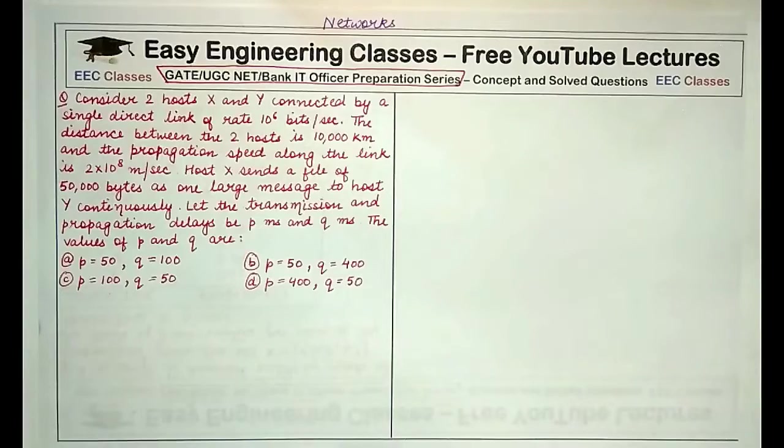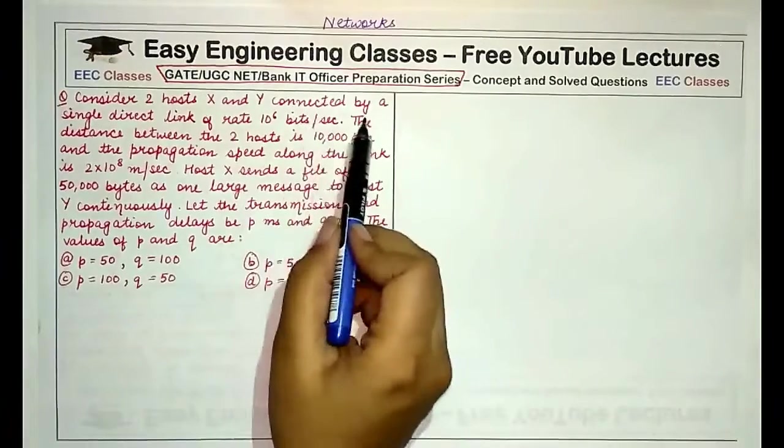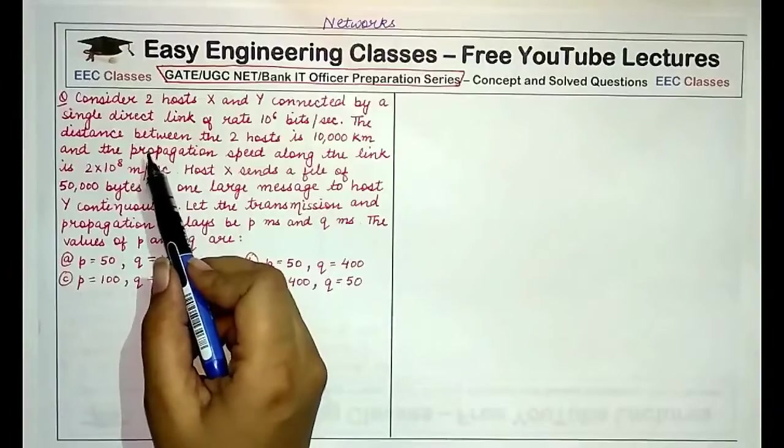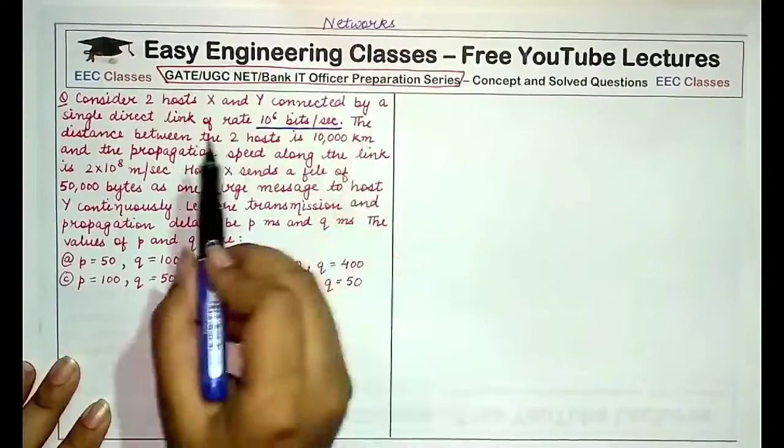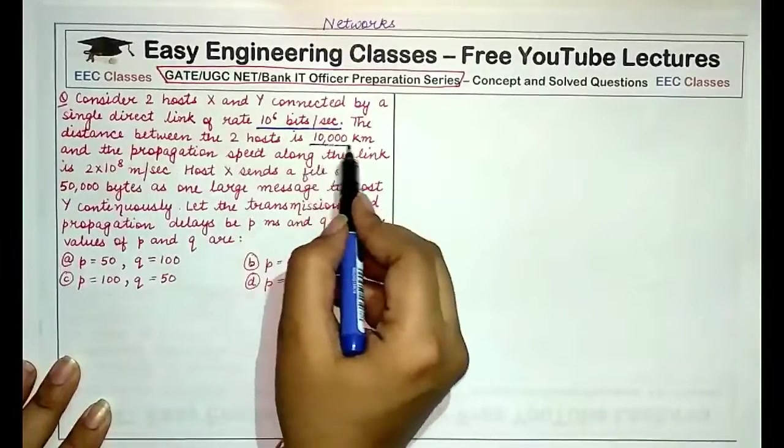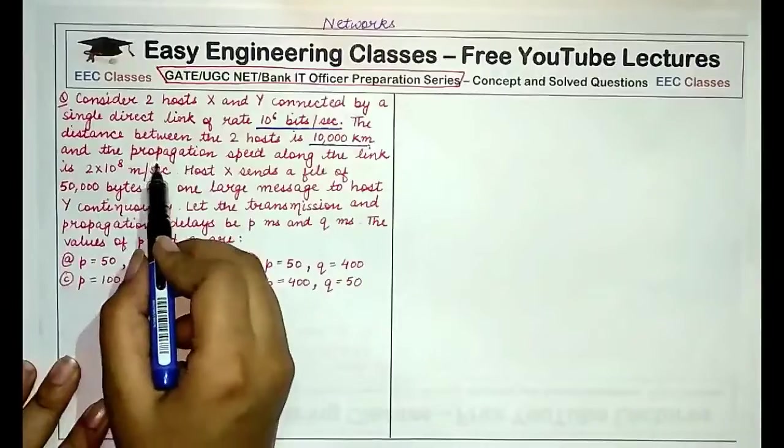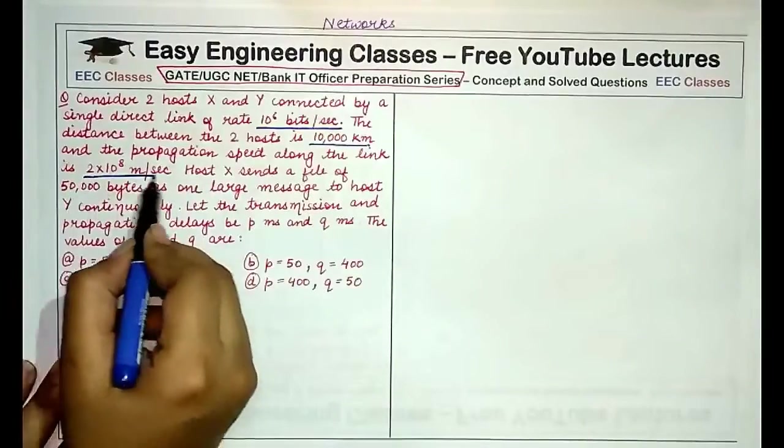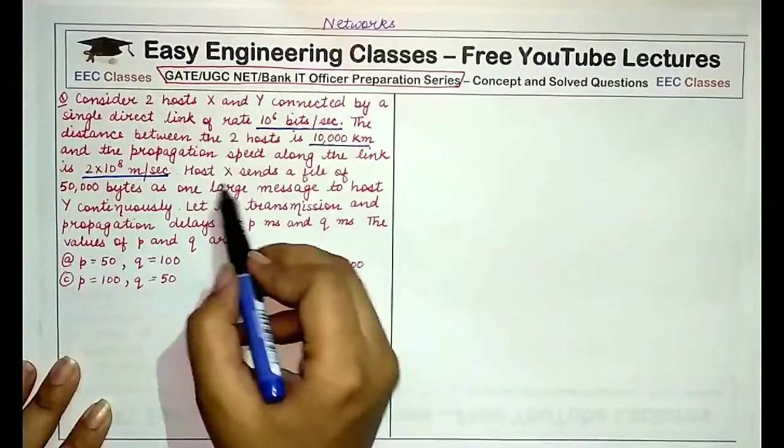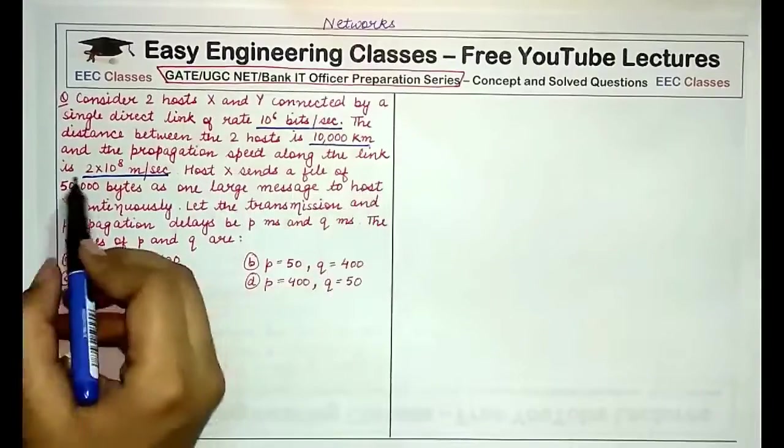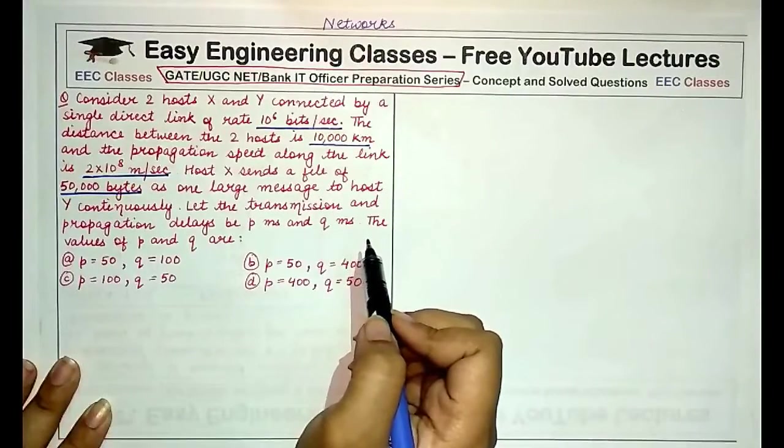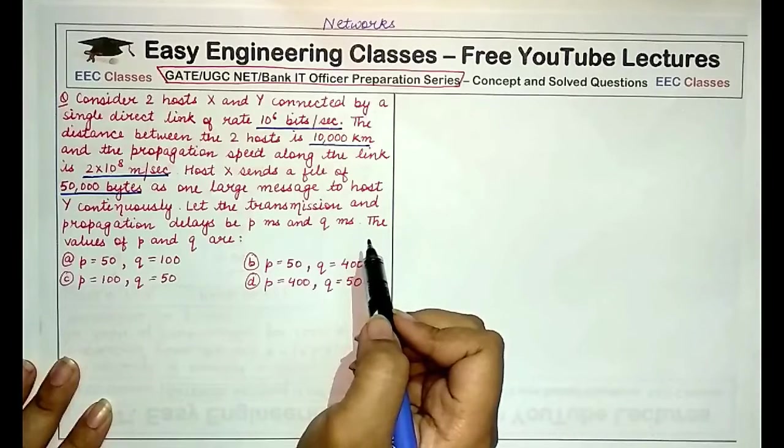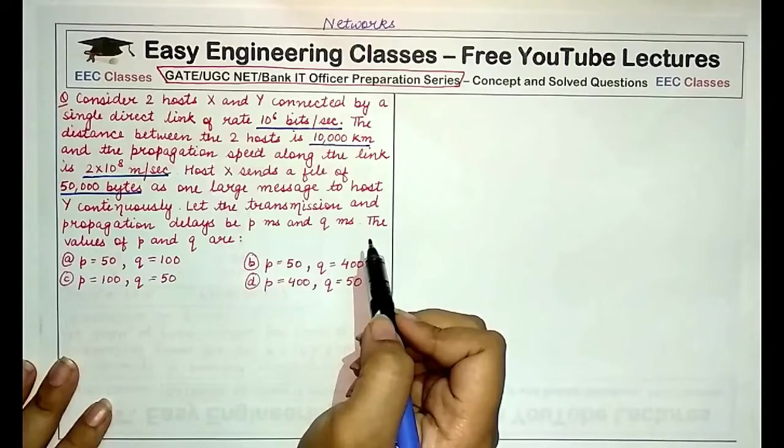In this question, you are given two hosts X and Y which are connected by a direct link of rate 10^6 bits per second. So you can underline the main points as you read. The distance between the two hosts is 10,000 kilometers, and the propagation speed along the link is 2×10^8 meters per second. Host X sends a file of 50,000 bytes as one large message to host Y continuously.